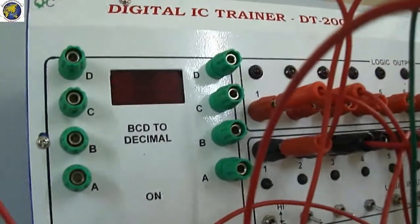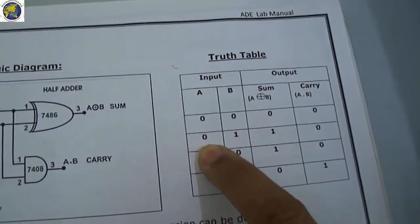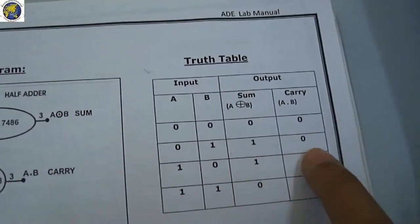The third condition is 1, 0. For 1, 0 you will get 1, 0 only.